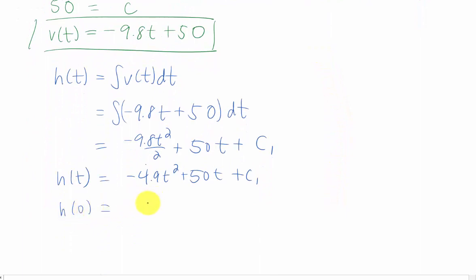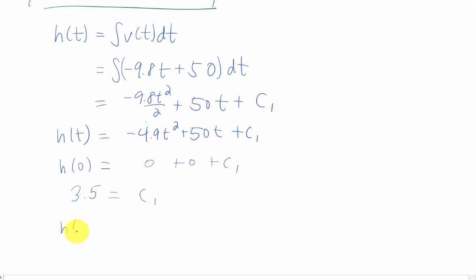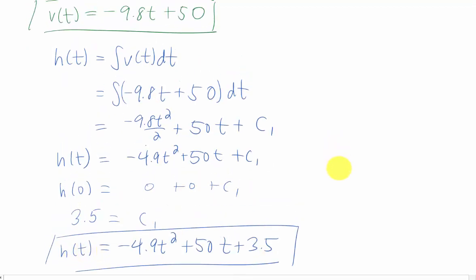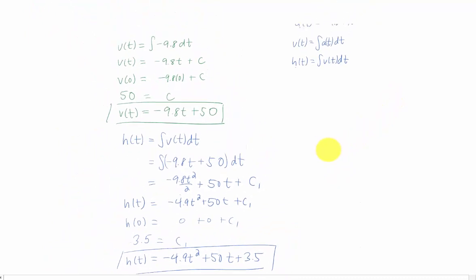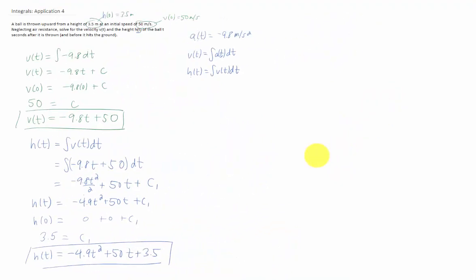Plugging in zero for t gives us just c₁ from our function. But h(0), we know has to be 3.5 meters. That gives us a final height function of that right there. And if I didn't miss any parts of the problem, I think that we are finished.